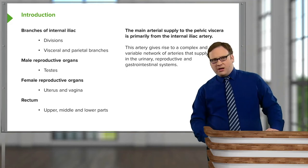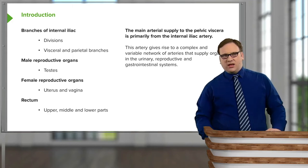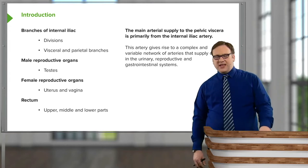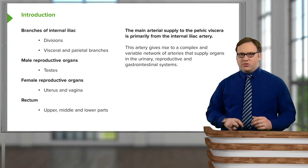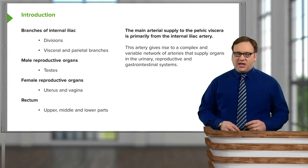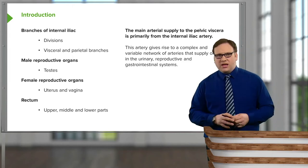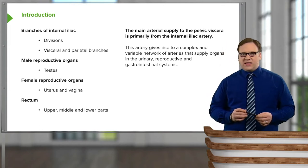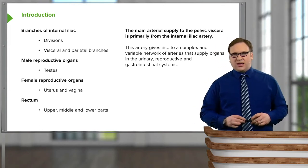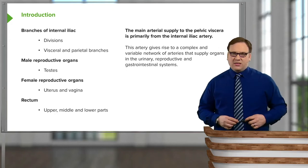It's important to remember that the rectum also runs with the anus in the perineum, and we'll look at that later in the course. The main arterial supply to the pelvic viscera is primarily from the internal iliac artery, which gives rise to a complex and incredibly variable network of arteries supplying organs within the urinary, reproductive and gastrointestinal systems located in the pelvis.